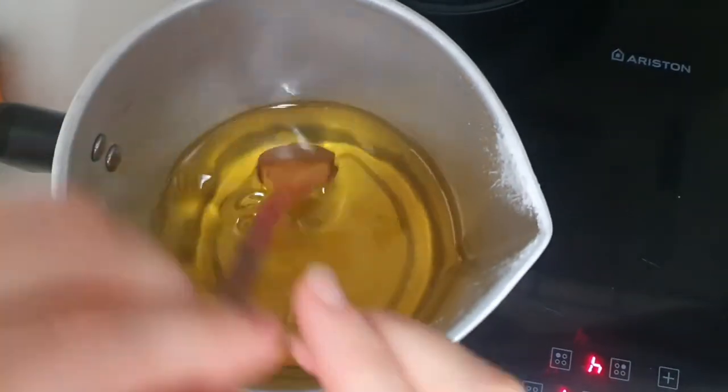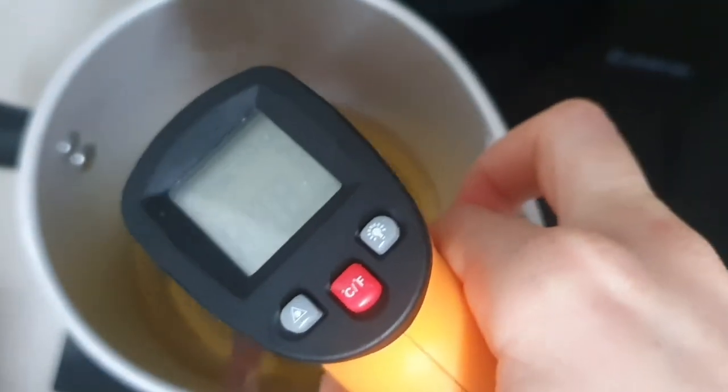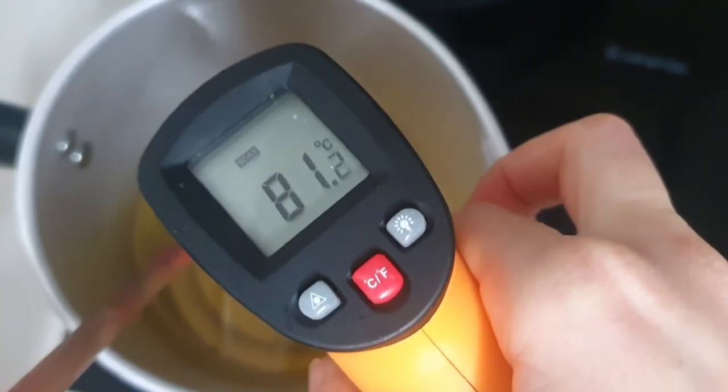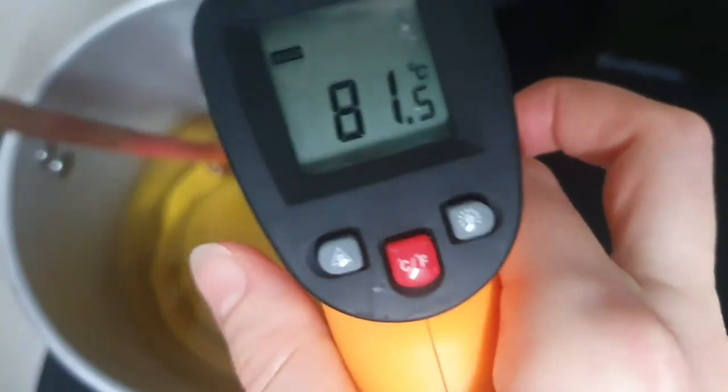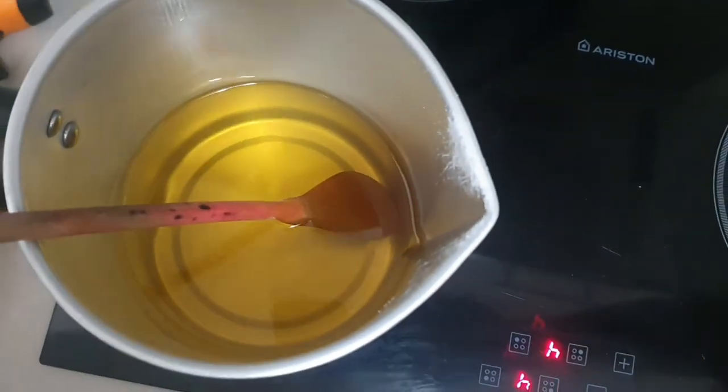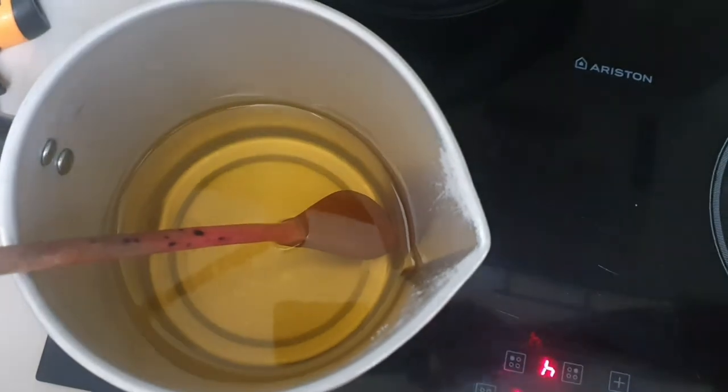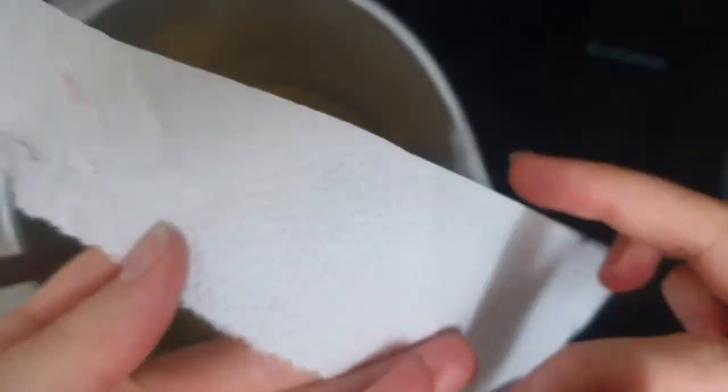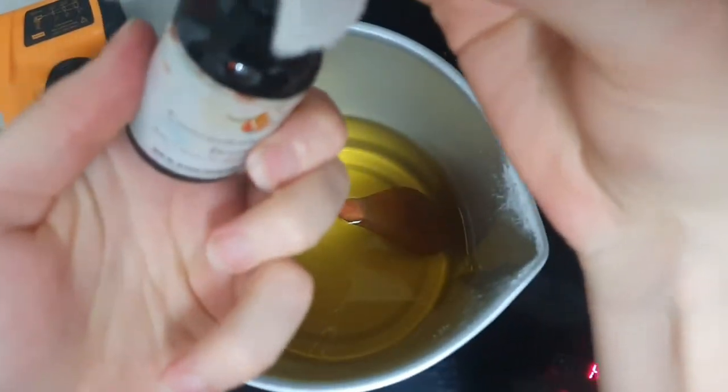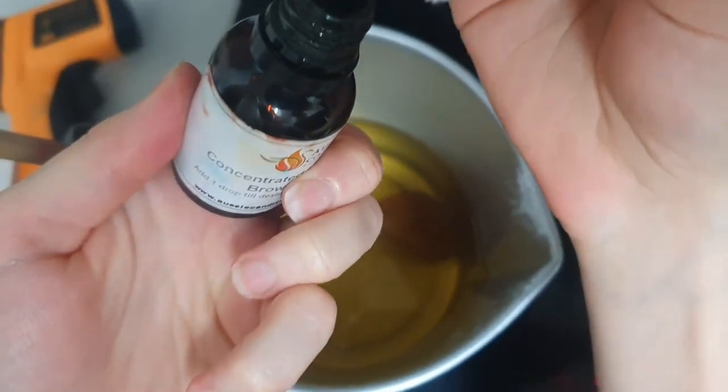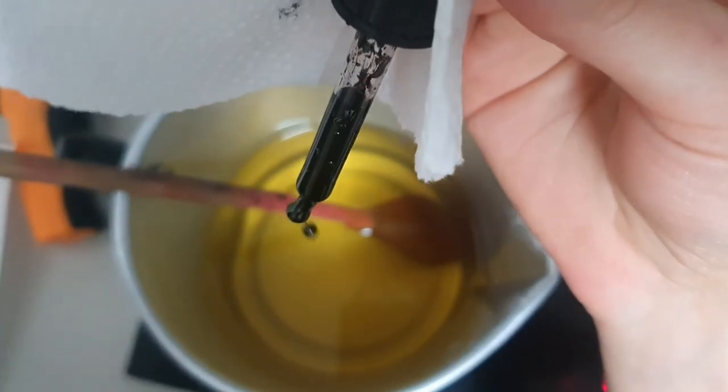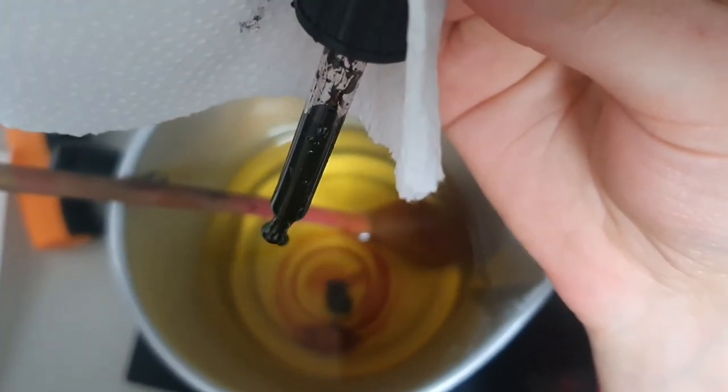Now that my wax is all melted, you can see in my thermometer here it's about just over 80 degrees. So it's perfect time now to add my dye and my fragrance. The first thing that I do is add my dye. I like to cut off a little piece of paper towel like this when I open my dye bottles, just so that I don't get it all over my fingers because it's really messy.